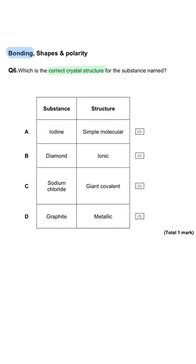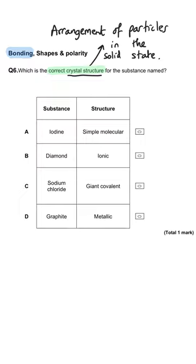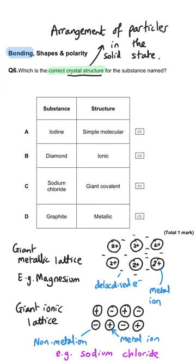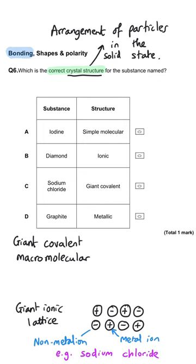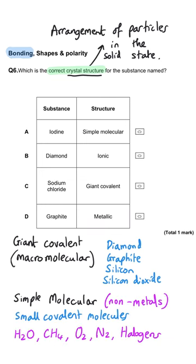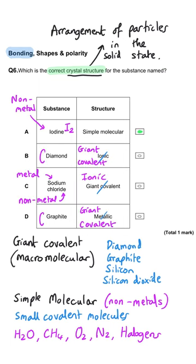Which is the correct crystal structure for the substance named? There are four crystal structures to know: the giant metallic lattice seen in metals such as magnesium; the giant ionic lattice when a non-metal joins with a metal forming positive and negative ions; the giant covalent structure or macromolecular found in diamond, graphite, silicon, and silicon dioxide; and simple molecular substances — small molecules joined by intermolecular forces. The correct answer is A because iodine is I2, a diatomic molecule, which will be simple molecular. Diamond is giant covalent, sodium chloride is ionic, and graphite is also giant covalent.